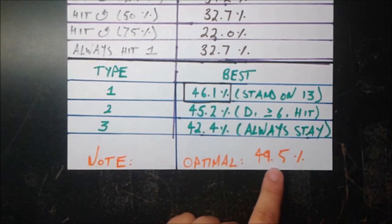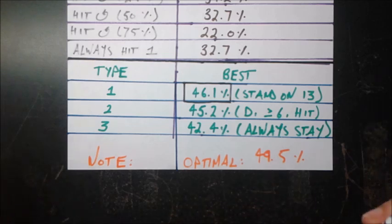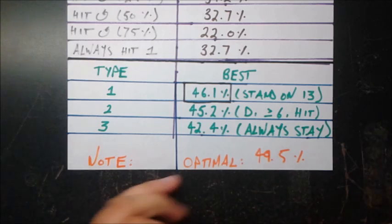So how far are we off from that? How far are we off from this optimal? And notice, let's just note, this optimal is still less than 50%. So the casino, of course, is still making money off you, even if you play optimally here.